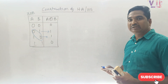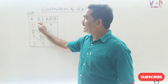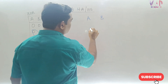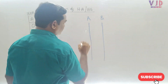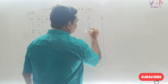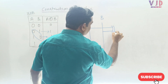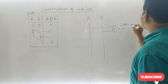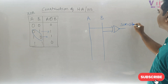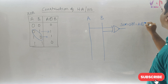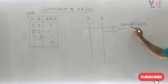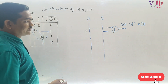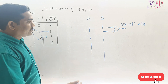We have seen the half adder circuit and the half subtractor circuit. The only inputs are A and B. For a half adder, the sum output is A XOR B, and for a half subtractor, the difference output is also A XOR B. So we can write: Sum = Difference = A XOR B. This output is common to both the half adder and the half subtractor.